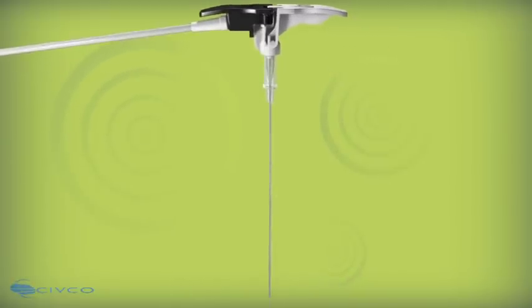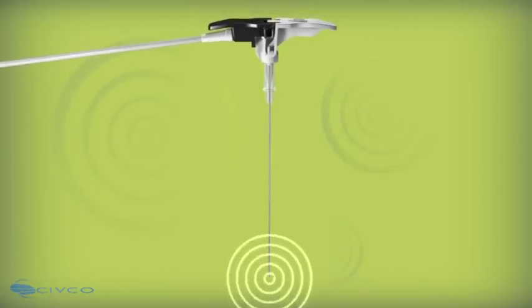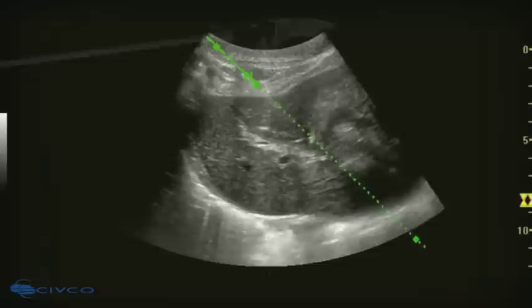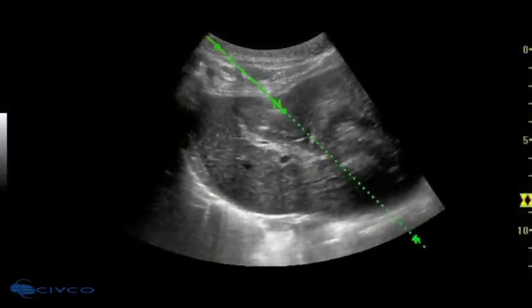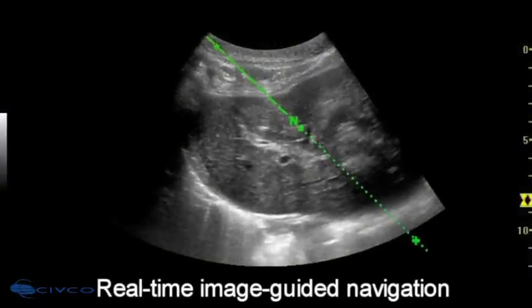The eTrax guidance system features a sensor embedded into the needle tip, giving physicians a more dynamic and accurate tool for tracking the tip of a needle under real-time image-guided navigation.